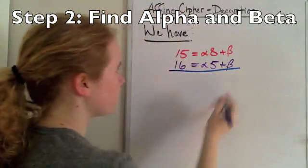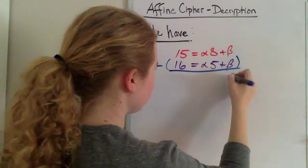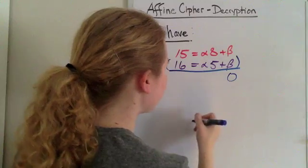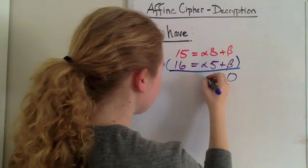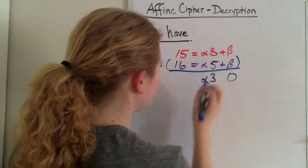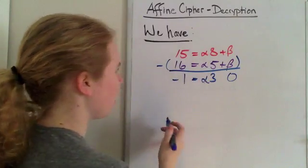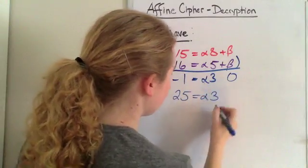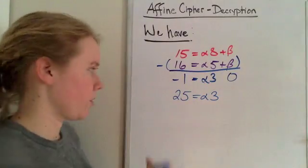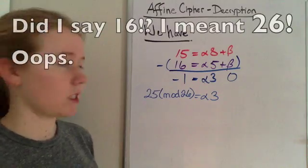So if we subtract this equation from this one, beta minus beta, so we don't have any beta anymore, zero. 8 alpha minus 5 alpha is 3 alpha, and 15 minus 16 is negative 1, which I'm going to write as 25 equals 3 alpha, just by modular arithmetic. That's mod 26 because we're using the English alphabet, which has 26 letters.